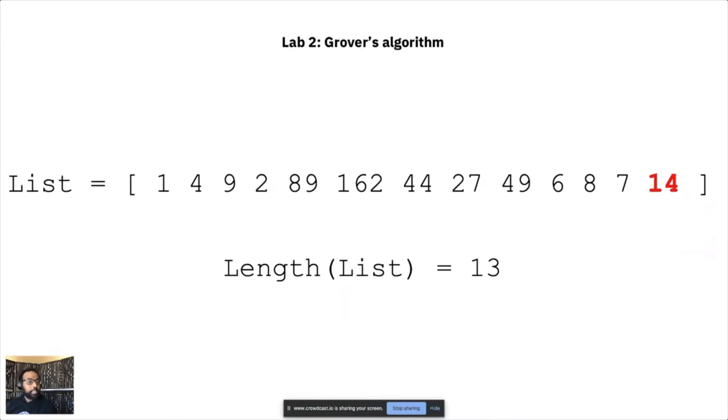If I gave you this list and told you using a classical computer to find the marked item, in this case that's the item with the red color on the end, it would take you at least in the worst case as many items as there are in the list. You would have to go through each item, and if you started from the left, you would need to look at all 13 items to get to the marked number.